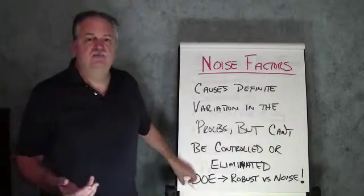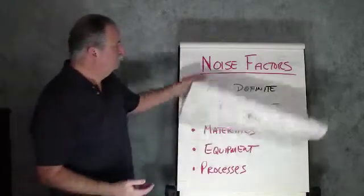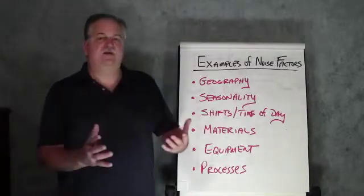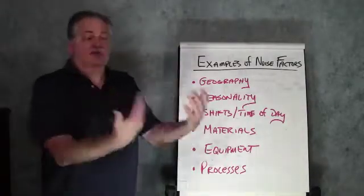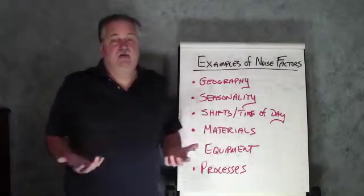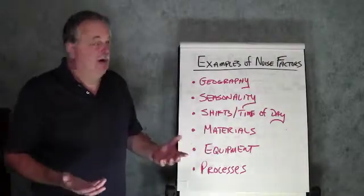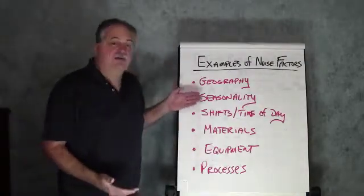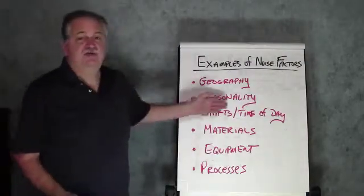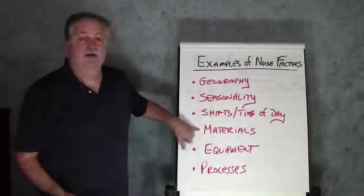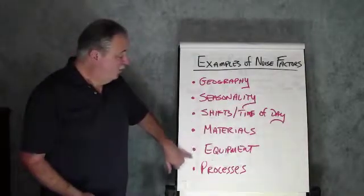All right, so what are some examples of noise factors? An example of a noise factor, things that exist in our process, but we can't control them. They're there, they're not going away. Geography, seasonality, shifts, time of day, things like materials, equipment, processes.